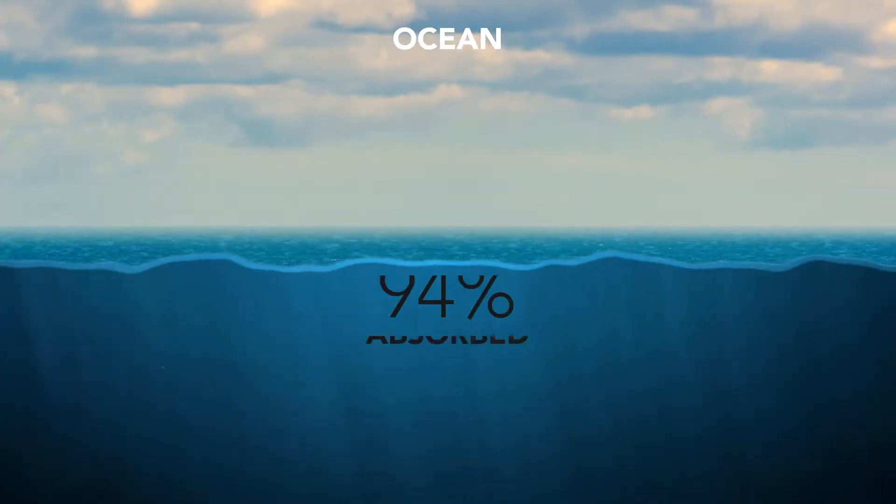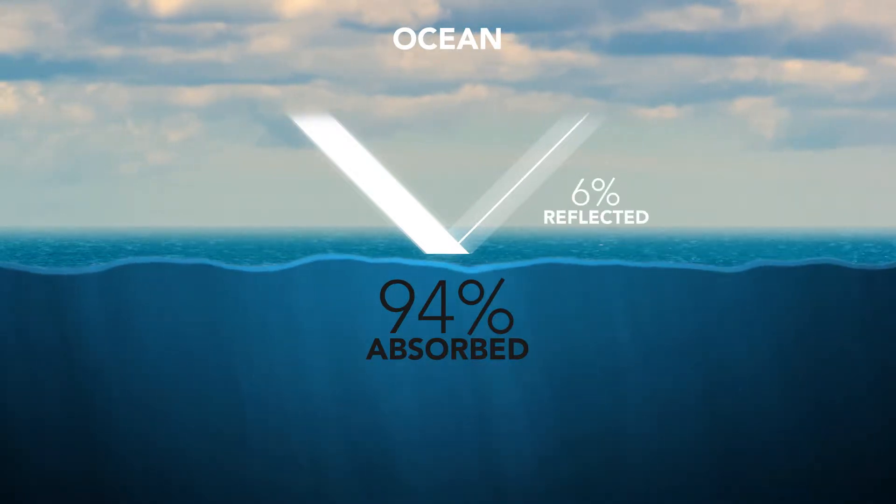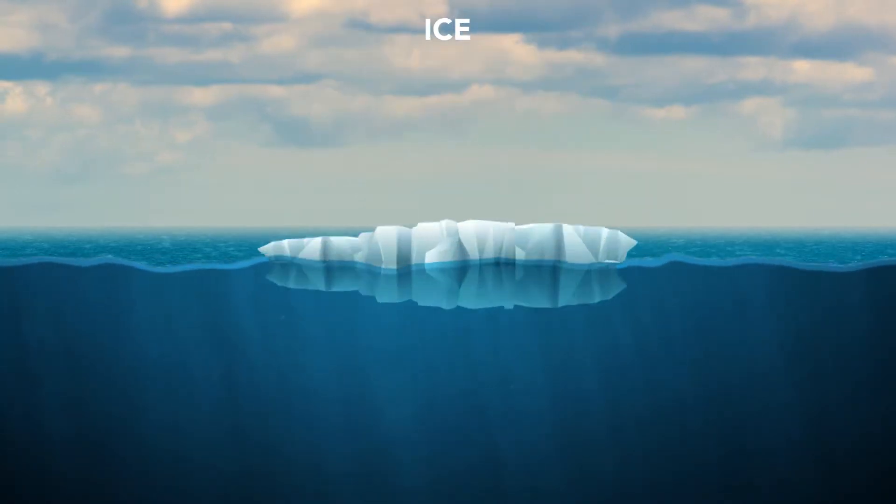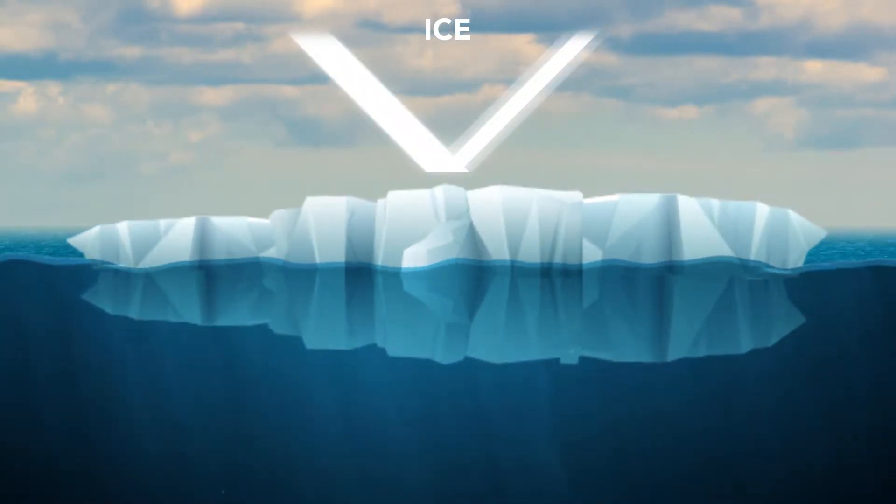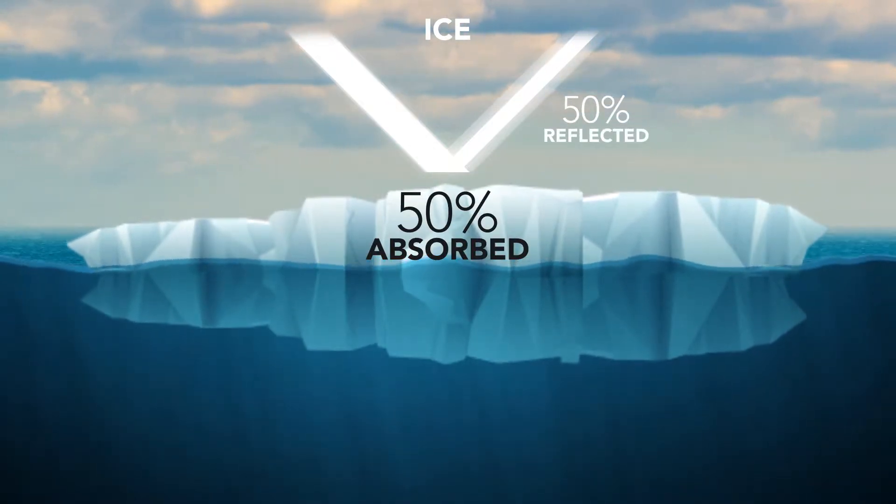Ocean water absorbs about 94% of the sun's incoming radiation, while only 6% of the sun's radiation is reflected back up to the atmosphere. Ice, on the other hand, is much more reflective. Sea ice reflects about half of the sun's radiation, and thus only half of the sun's radiation is absorbed into the ocean.